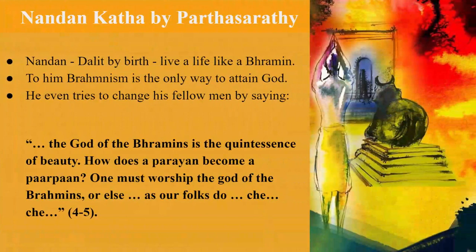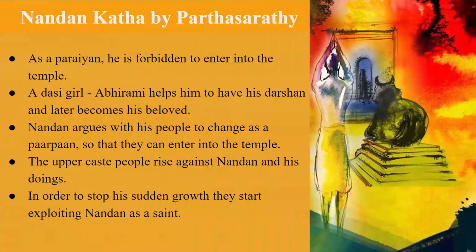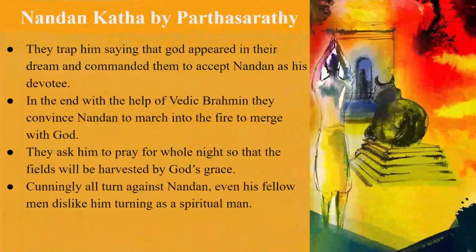The entire story revolves around the main character Nandana. Nandana, though a Dalit by birth, wants to live a life like a Brahmin because to him Brahminism is the only way to attain God. As a Parayan, he is forbidden to enter the temple. A Dasi girl, Abhirami, helps him to have his darshan and later becomes his beloved. Nandana argues with his people to change his approach so that they can enter into the temple. The upper caste people rise against Nandana and his doings. In order to stop his sudden growth, they start exploiting Nandana as a saint, saying that God appeared in their dream and commanded them to accept Nandana as his devotee. In the end, with the help of a Vedic Brahmin, they convince Nandana to march into the fire to merge with God.